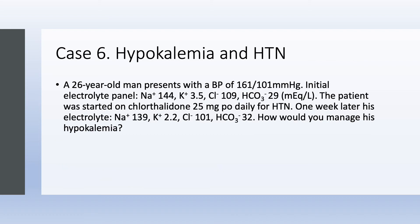Case number 6: Hypokalemia and hypertension. A 26-year-old man with blood pressure 161/101. Initial electrolytes: sodium 144, potassium 3.5 (borderline low), chloride 109, bicarb 29 (slightly elevated). He was started on chlorthalidone 25 mg daily for hypertension. One week later, sodium dropped slightly, but potassium is now profoundly low at 2.2, chloride 101, and bicarb rose to 32. How would you manage his hypokalemia?